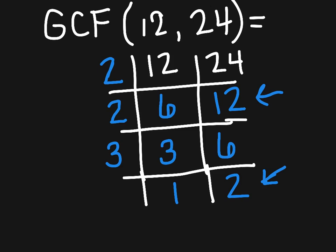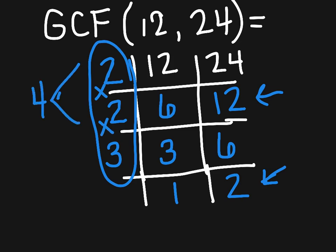So now in order to find the greatest common factor, I circle these numbers over here. They're factors that we pulled out of 12 and 24. And I will multiply them. I know that 2 times 2 is 4. And 4 times 3 is 12. You could also put it in your calculator as 2 times 2 times 3.